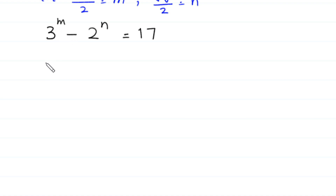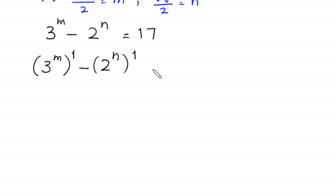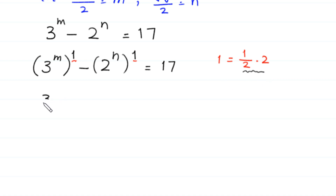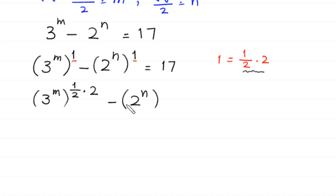Now this 3 to the power m has power 1, which equals 1 over 2 times 2. We replace this 1 with 1 over 2 times 2, giving 3 to the power m whole to the power 1 over 2 times 2, minus 2 to the power n whole to the power 1 over 2 times 2, is equal to 17.